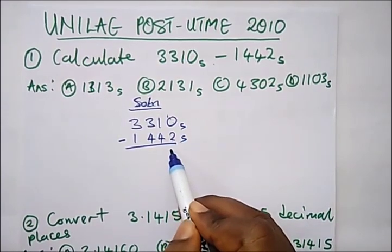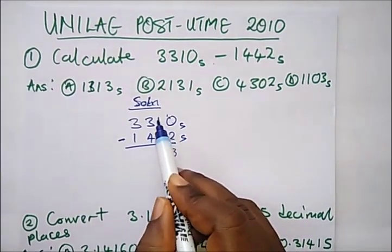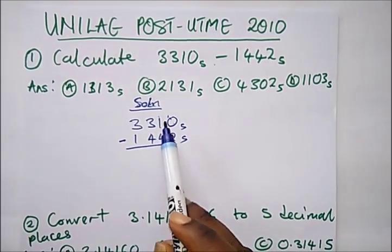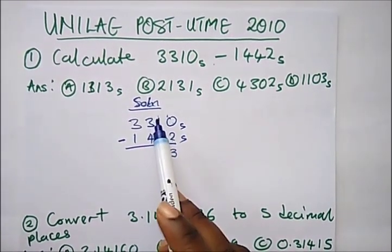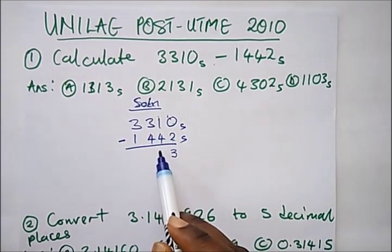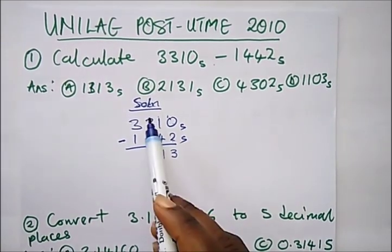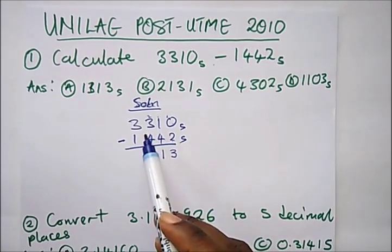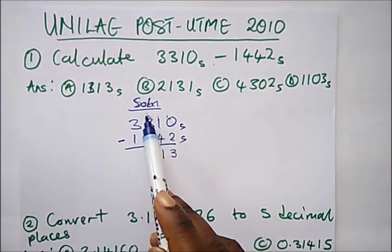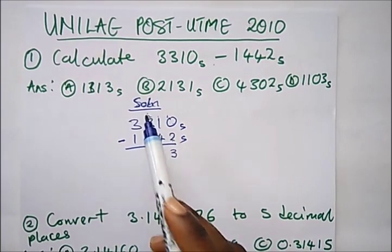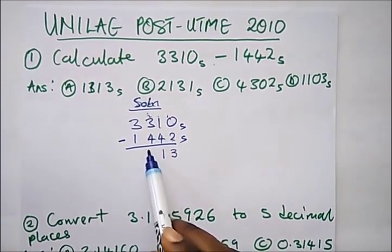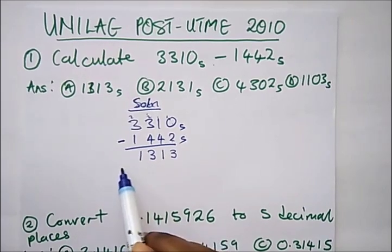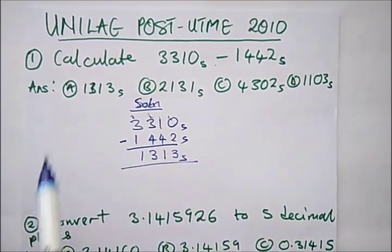5 minus 2 gives us 3. We still need to borrow a 1 because we can't subtract 4 from 0 — borrowing gives us 5, so 5 minus 4 is 1. Next, we can't subtract 4 from 2, so we borrow again: 5 plus 2 is 7, and 7 minus 4 is 3. We're left with 2, so 2 minus 1 is 1. The answer is option A.